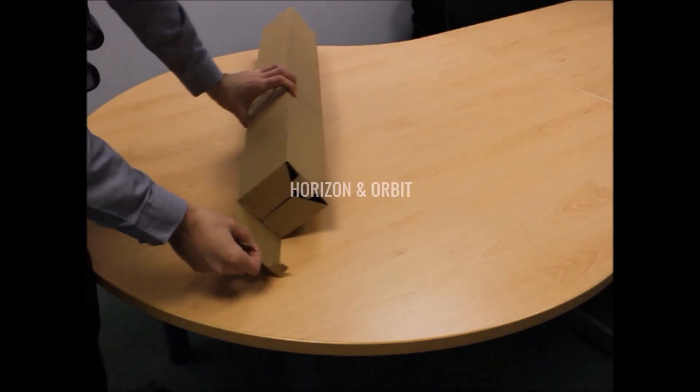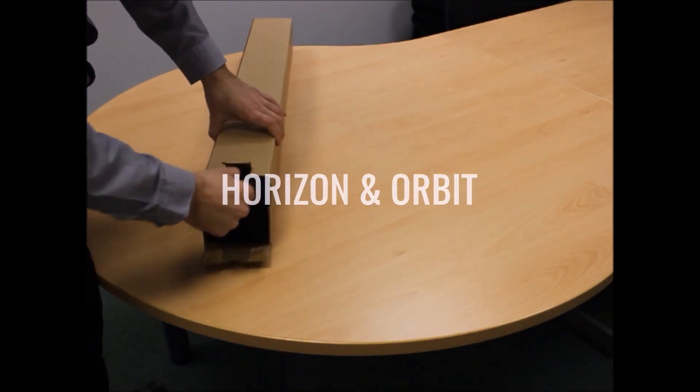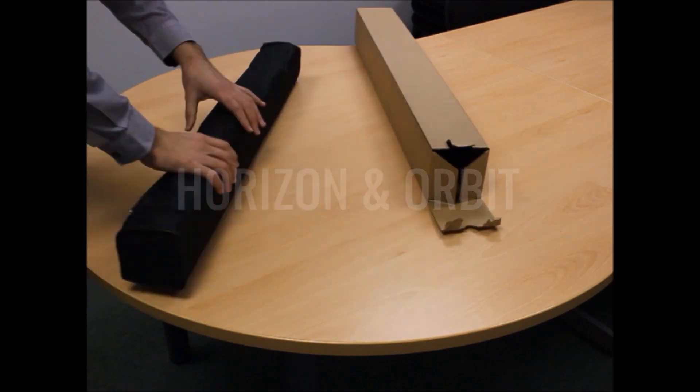The first stand we're showing you here is the Horizon and Orbit stands. One of them is the snap rail, the other being the adhesive rail.